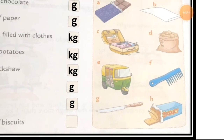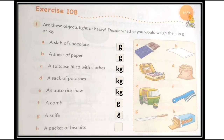Number (h): a packet of biscuits. You can easily put a packet of biscuits in your pocket — even children can do it. It is not that heavy at all, so we measure it in grams. Please write down this exercise in your fair book — it is compulsory for all of you.